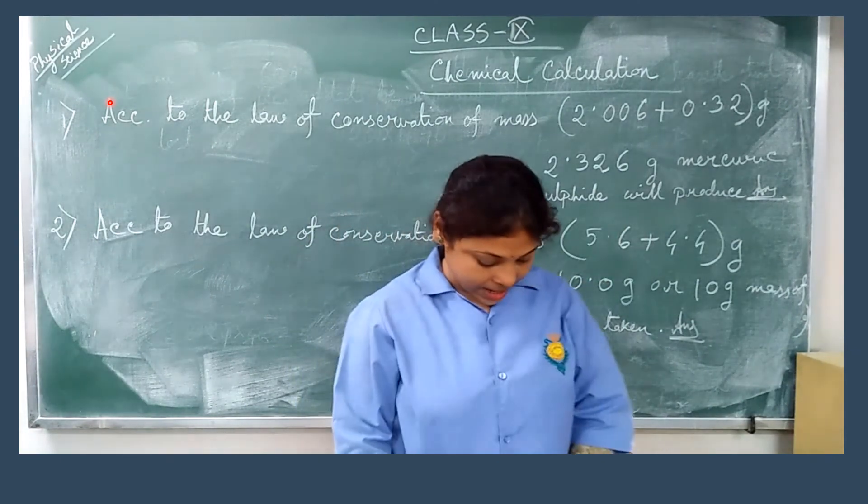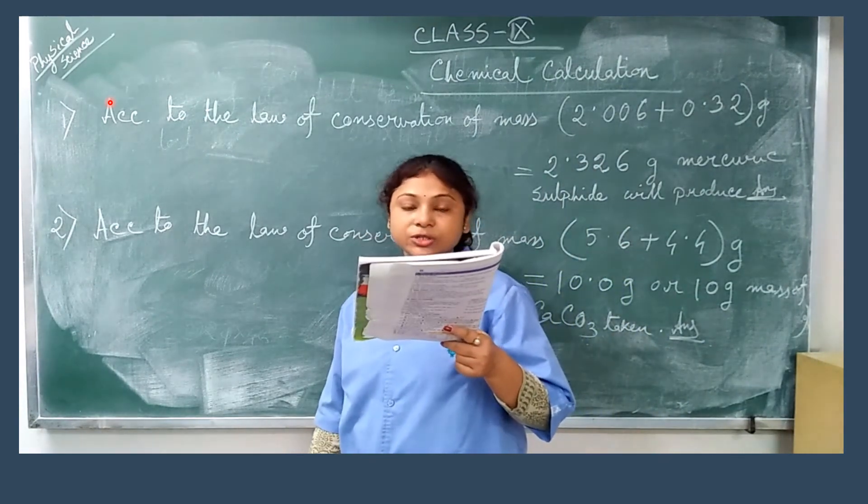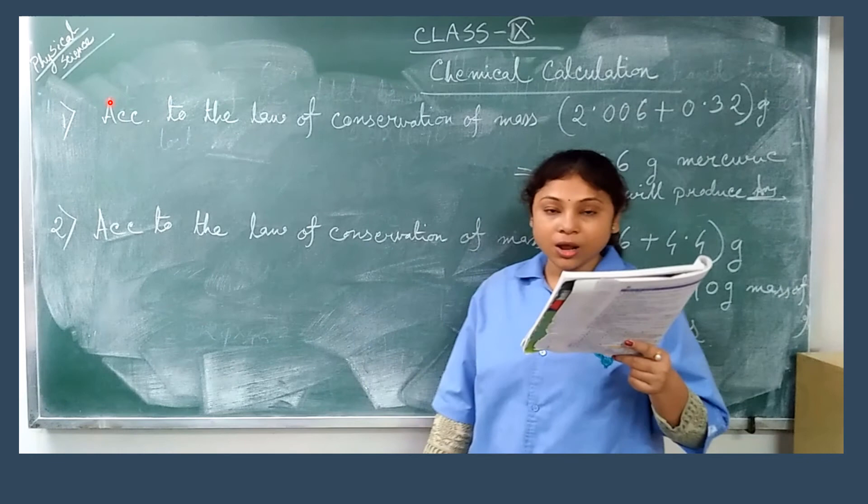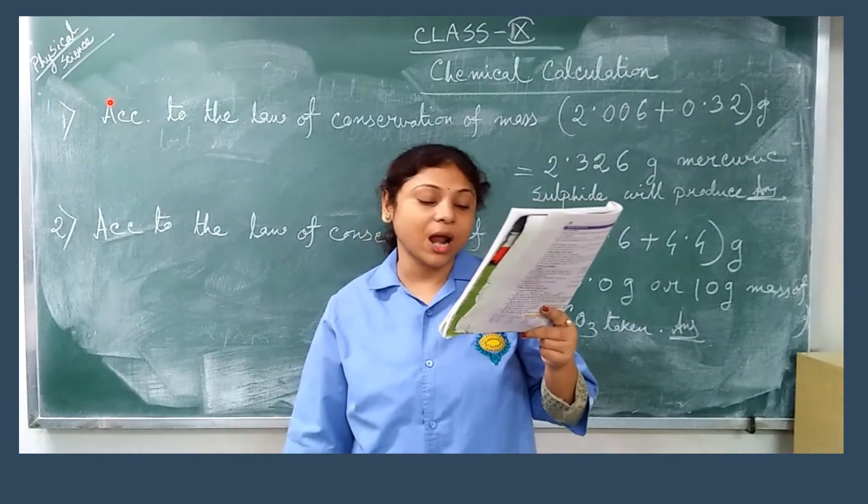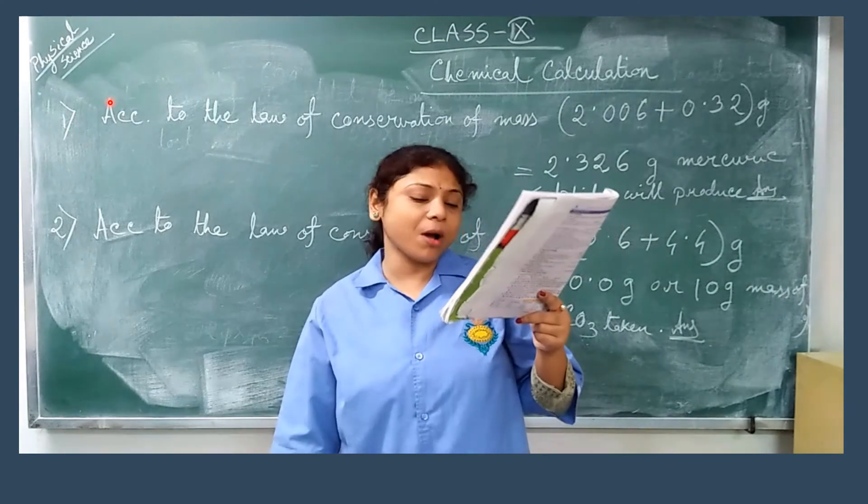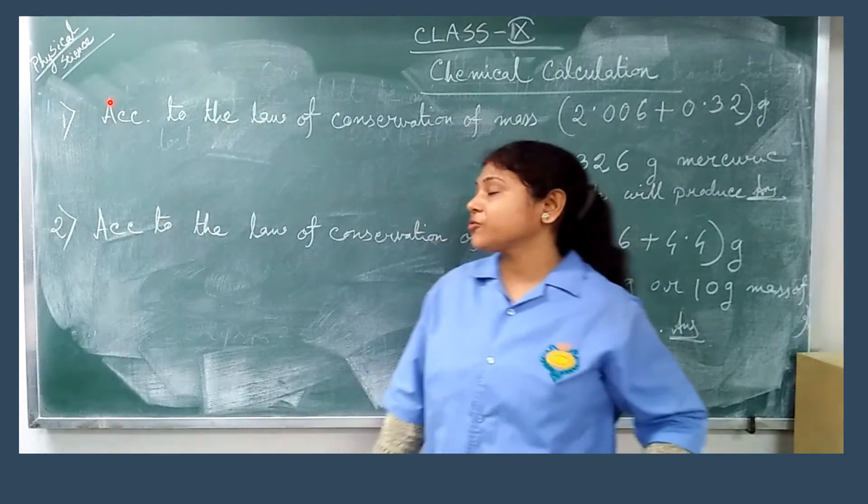Now the next one. The amount of calcium carbonate is heating to produce 5.6 gram calcium oxide and 4.4 gram carbon dioxide. What amount calcium carbonate was taken? This is also very simple.